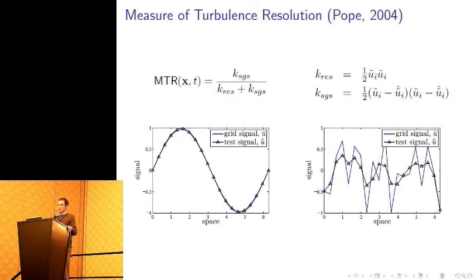So to this end, FDS has started to look at new metrics above and beyond the D star over DX criterion. And one metric that we have added is what's called a measure of turbulence resolution, which was introduced by Pope in a paper in 2004. And the basic idea is to say that we want to model the fraction of unresolved kinetic energy in the flow. So what we do is we define this function we call the measure of turbulence resolution as the fraction of the subgrid scale kinetic energy to the total kinetic energy. The resolved kinetic energy is just the kinetic energy that we have on our grid, and the subgrid scale kinetic energy we have to model. Here we take the model to be what's called a scale similarity model.